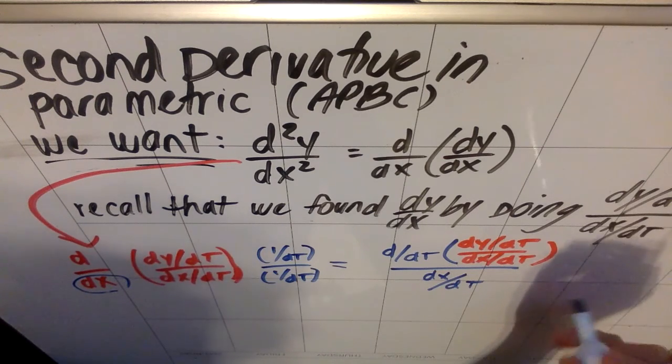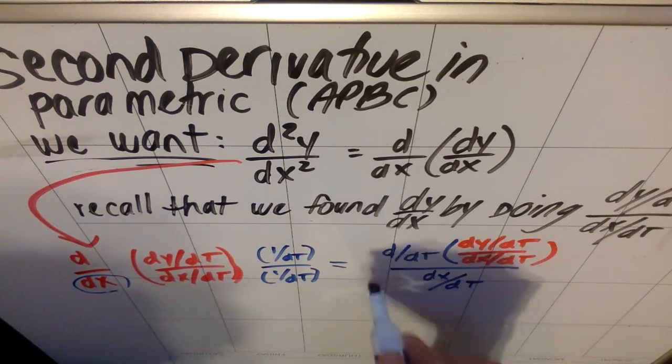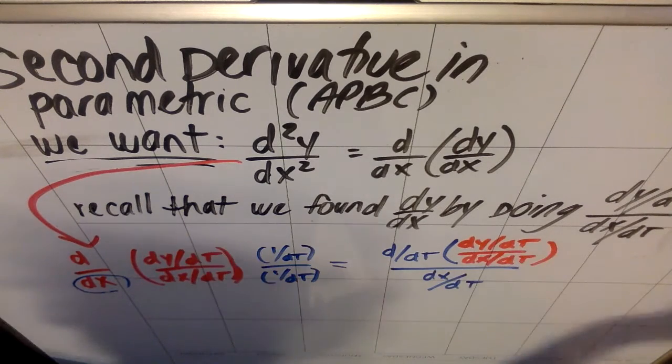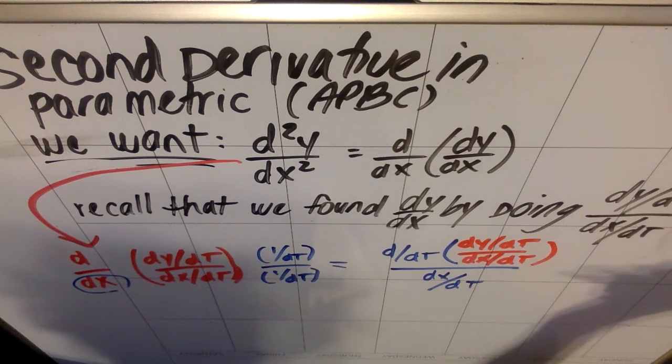So again, essentially what you're doing is you're deriving with respect to t the derivative you already found, and then you're dividing by the derivative with respect to t of x.